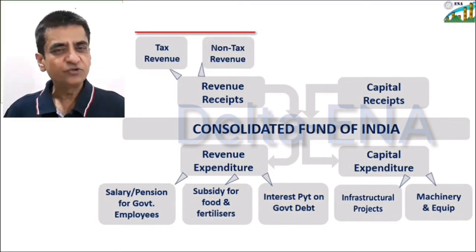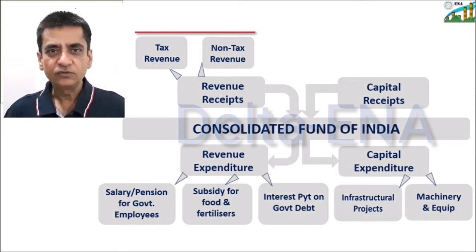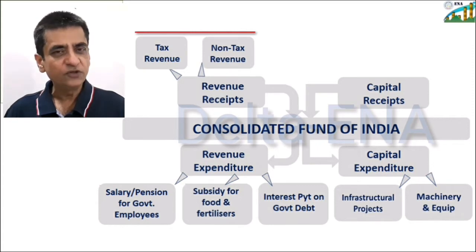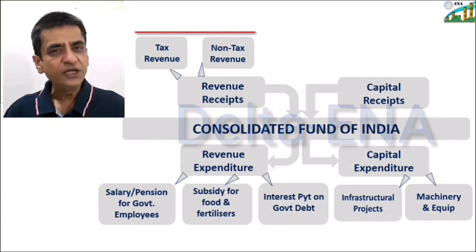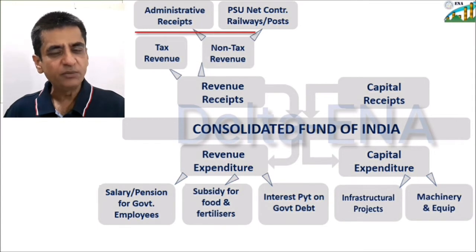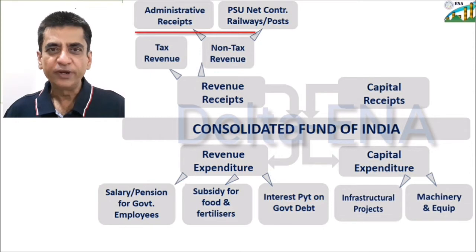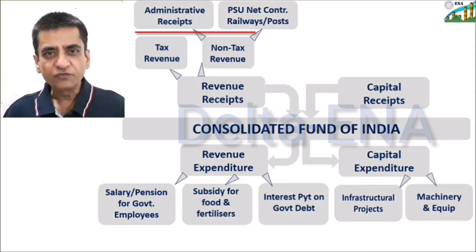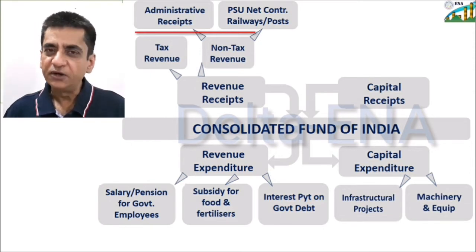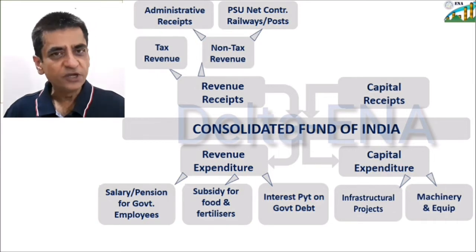Revenue receipts come from tax revenues and non-tax revenues. As tax revenue is a detailed topic, we will discuss it later. Non-tax revenue mainly comes from the government's administrative receipts and public sector undertakings' contribution to government, which comes by way of dividends from post offices, railways and other PSUs.